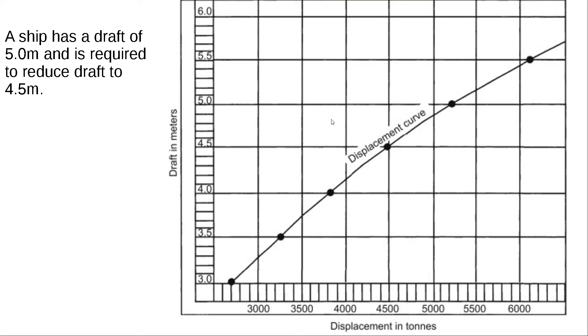The final kind of question we're going to talk about today is the amount of cargo required to be loaded or discharged to effect a required change in draft. Example of this being, a ship has a draft of 5.0 meters required to reduce her draft to 4.5 meters.